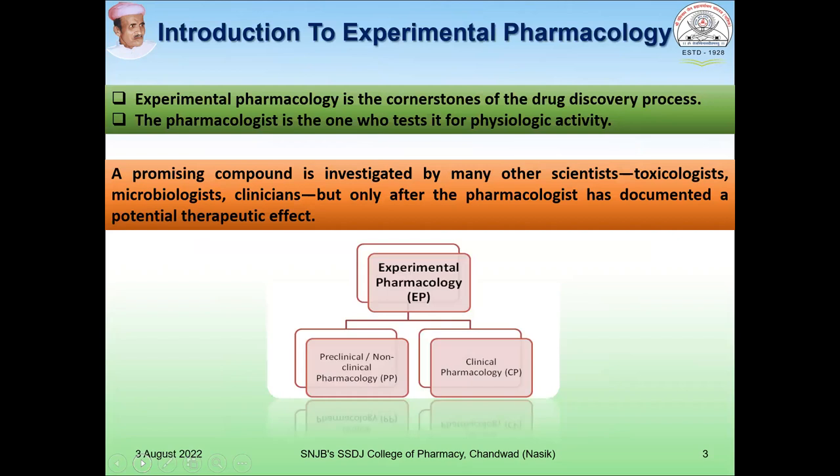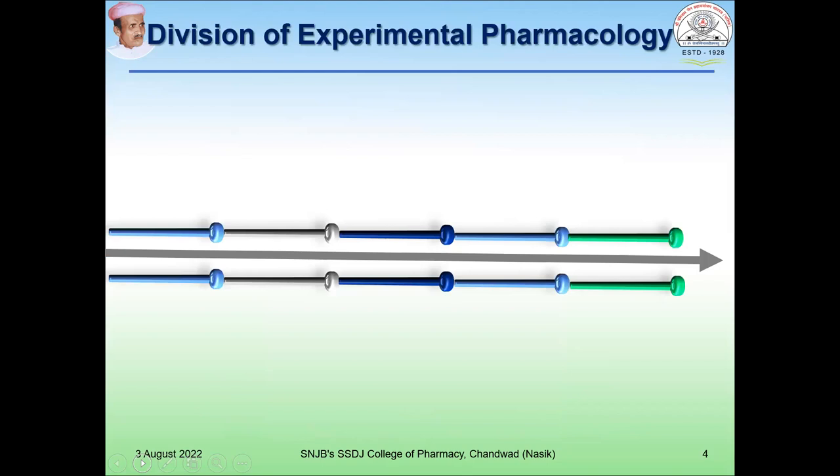Now we will see the basic concepts related to experimental pharmacology. It is a cornerstone of the drug discovery process. The pharmacologist is the one who tests for physiologic activity. A promising compound is investigated by many other scientists, toxicologists, microbiologists, and clinicians, but only after the pharmacologist has documented a potential therapeutic effect. Experimental pharmacology is composed of two major disciplines: non-clinical, that means pre-clinical pharmacology, and clinical pharmacology.